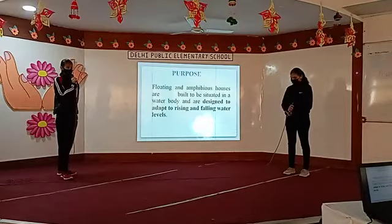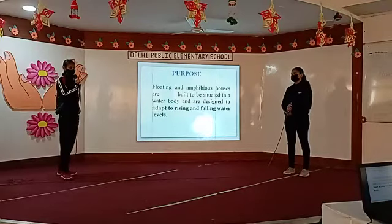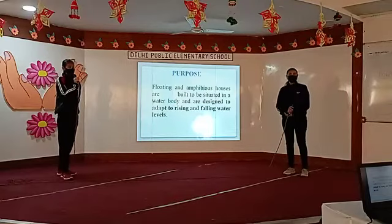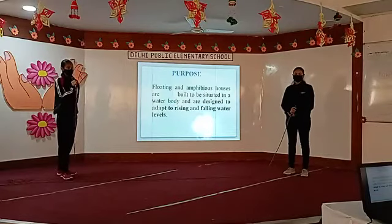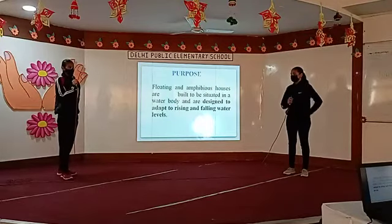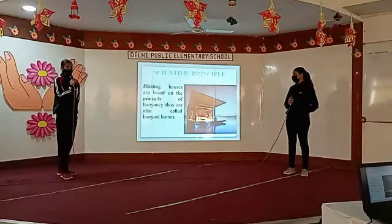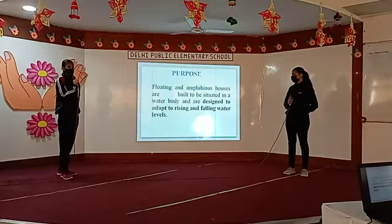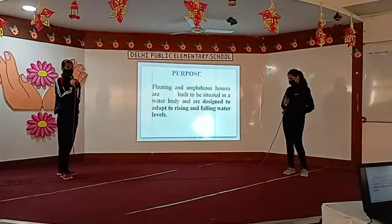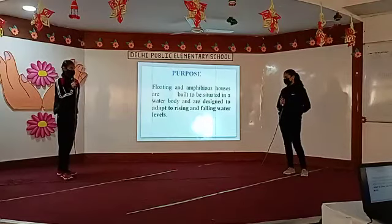The purpose of making this project is — there are two types of floating houses: floating and amphibious. Floating and amphibious houses are situated on the water bodies and are designed to adopt the rising and falling of the water level. Floating houses are permanently on the water, while amphibious houses are situated above the water and are designed to float when the water level rises.